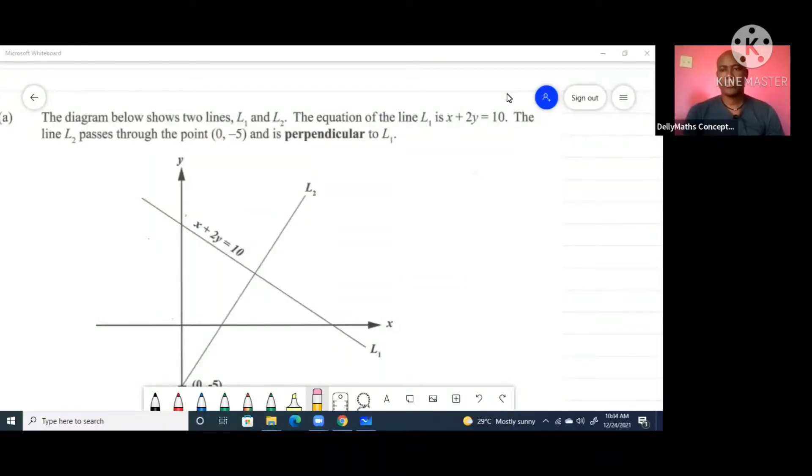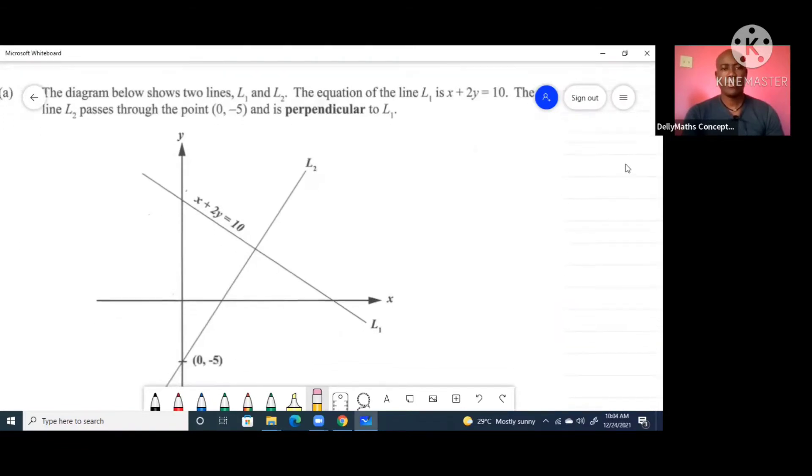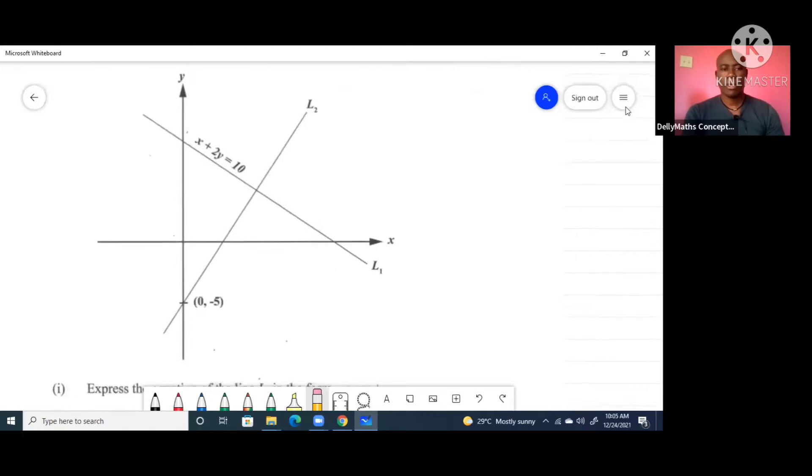All right everybody, in this presentation we're looking at a question for CXC July 2021, and it's a coordinate geometry question. The diagram below shows two lines L1 and L2. The equation of L1 is x plus 2y equal 10. The line L2 passes through the point (0, -5) and is perpendicular to L1. We're looking at the diagram here.